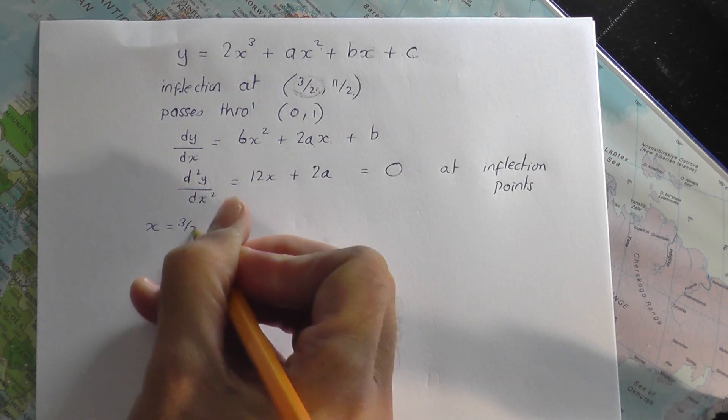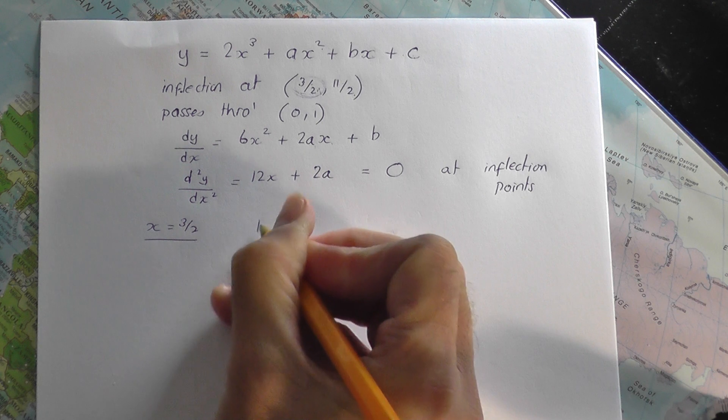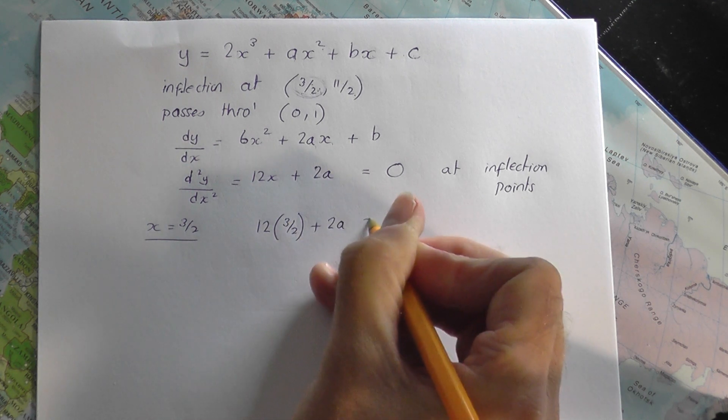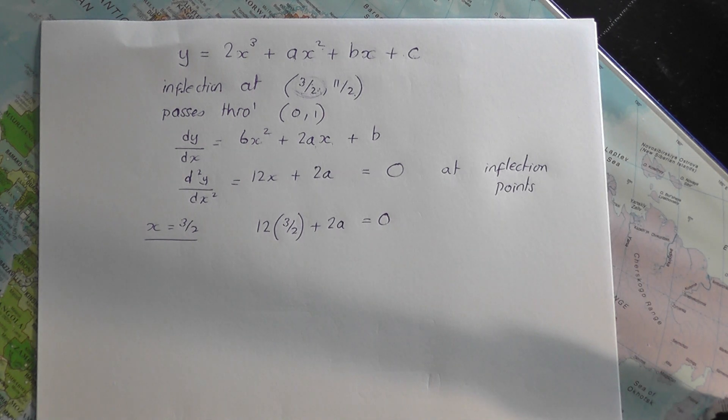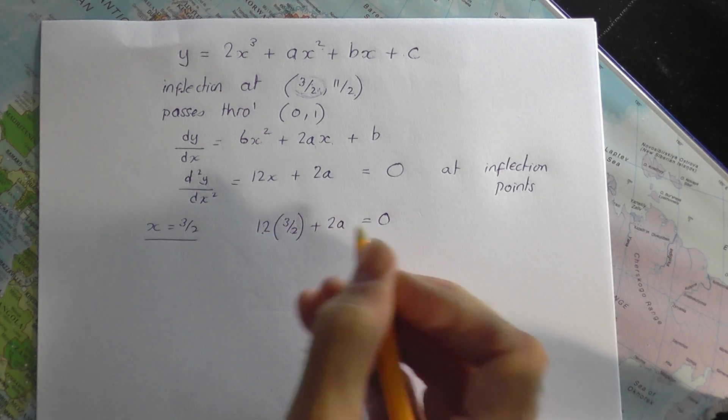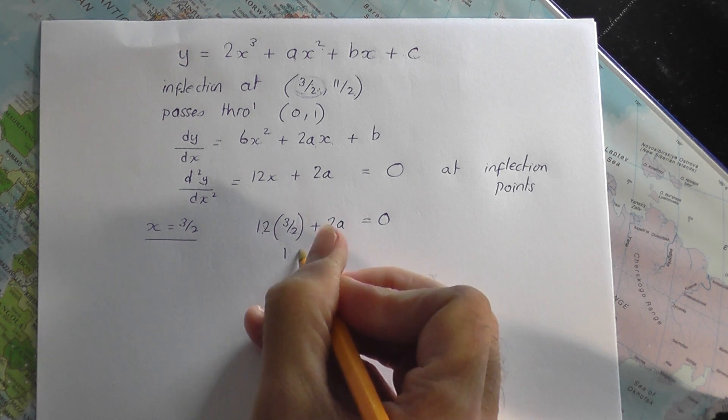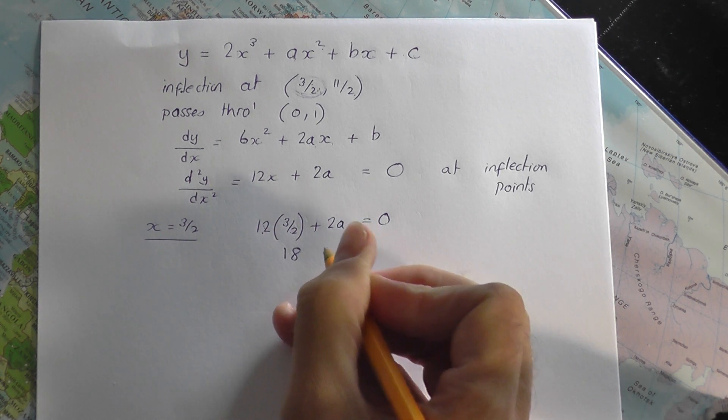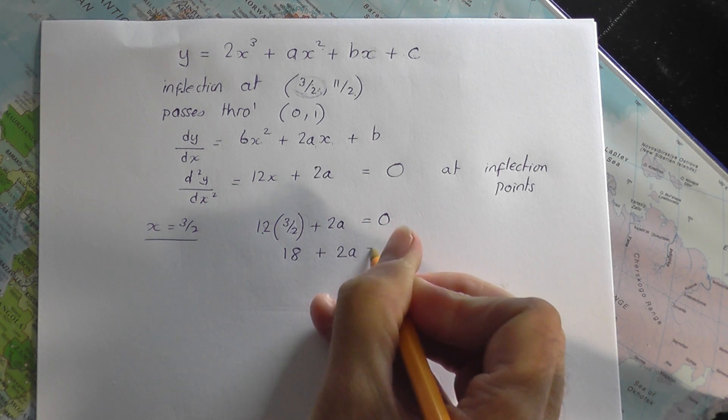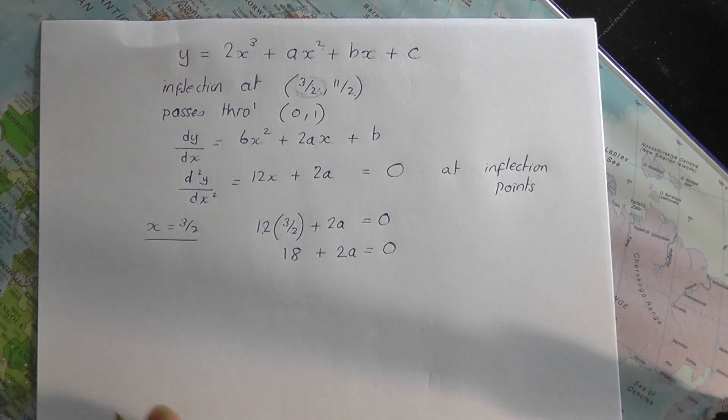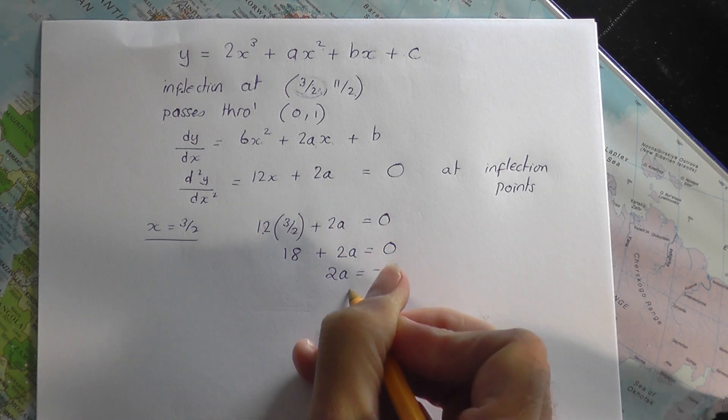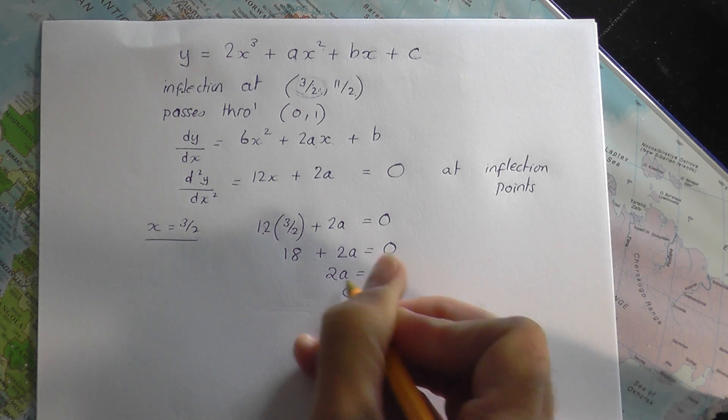So, if I let x equals 3 over 2 in this, you're going to get 12 times 3 over 2, plus 2a, equal to 0. So, if I work out 12 times 3 over 2, the 2 and the 12 cancel to give 6. 6 times 3 is 18. 18 plus 2a equals nothing. So, from this, you can see that 2a is equal to minus 18. a turns out to be minus 9.